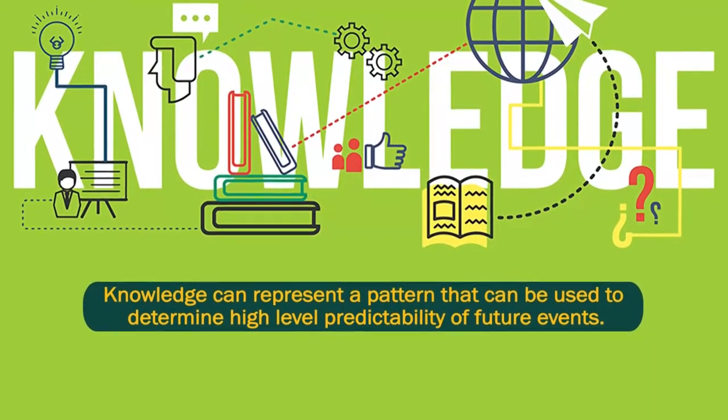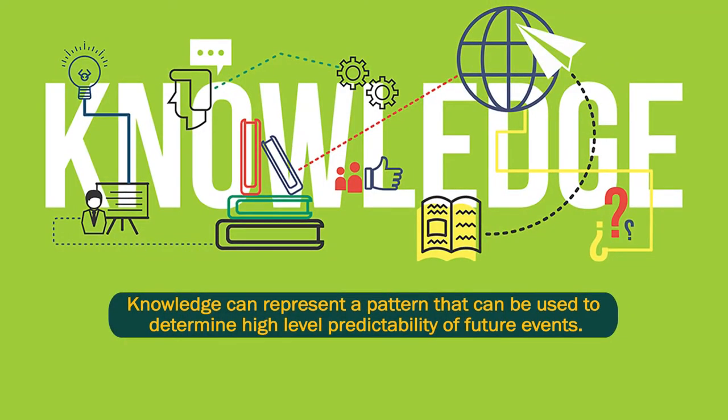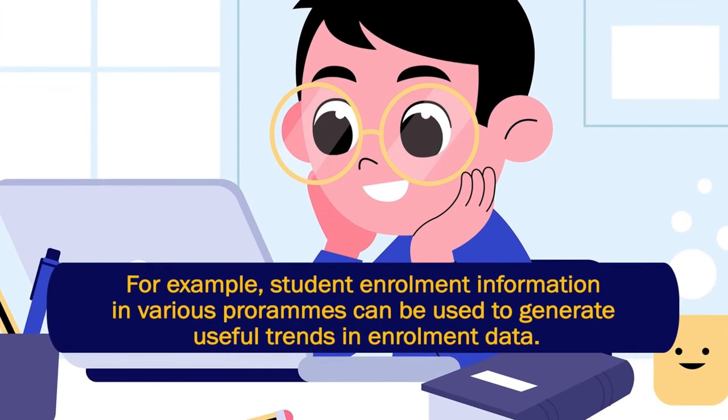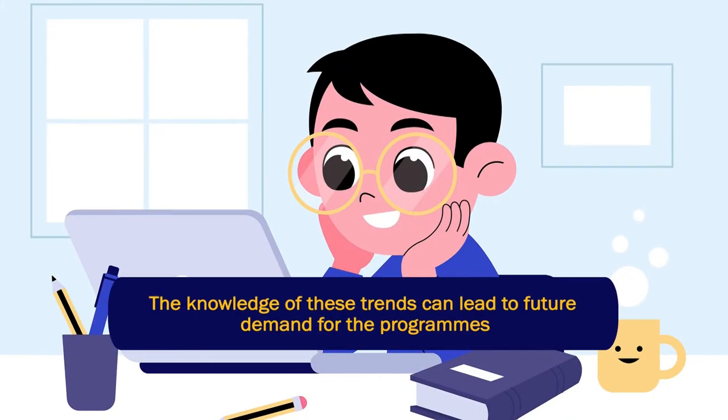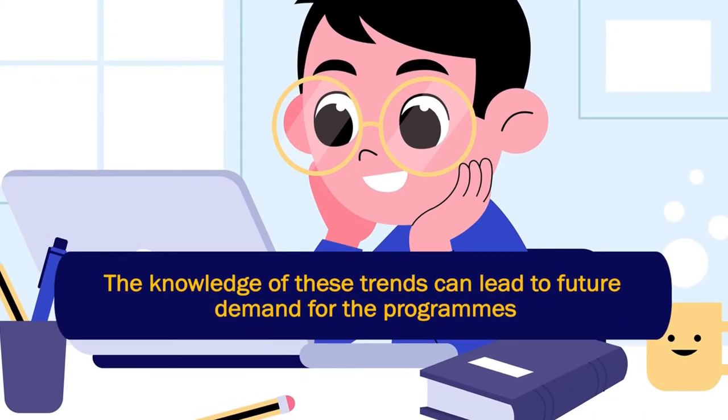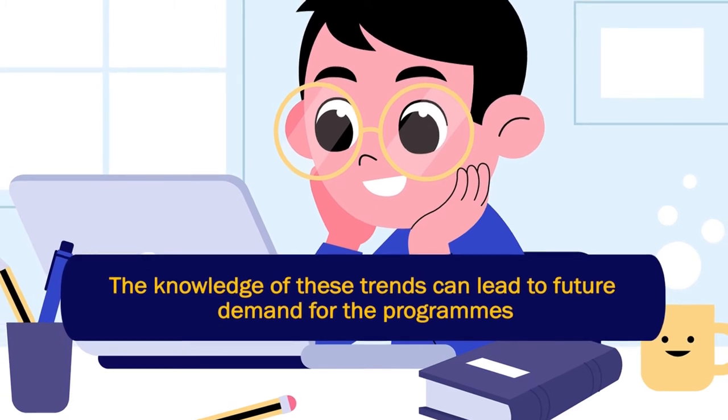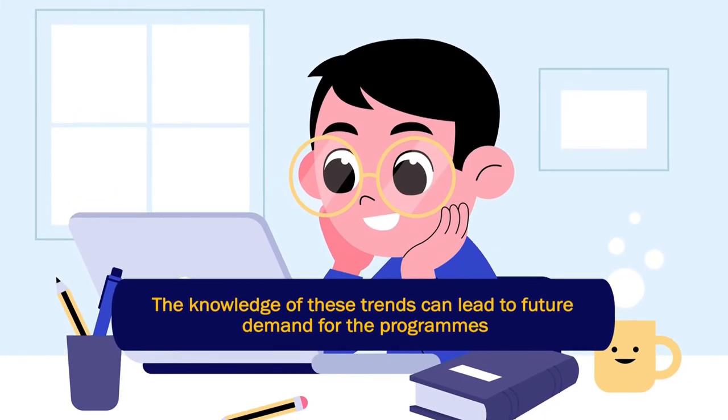Student enrollment information in various programs can be used to generate useful trends in enrollment data. The knowledge of these trends can lead to predicting future demand for the programs — making available adequate resources for fulfilling those demands. That is how knowledge can be utilized. You are getting information about how many students took admission this year and last year, and the knowledge derived is predictability — how future trends are going to behave with this kind of data.